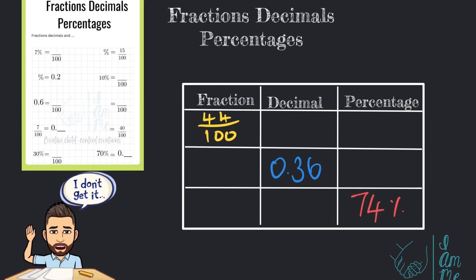Let me show you how quick and easy these are. 44 over 100, which is the same as 0.44, filling the first two places with my numerator, which again is 44%. 0.36 as a decimal. Well, these first two places are what I use over 100. And percentage again is 36%.